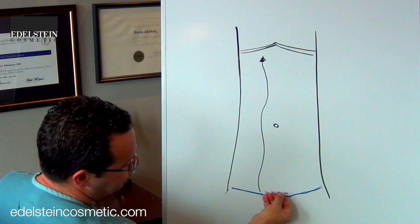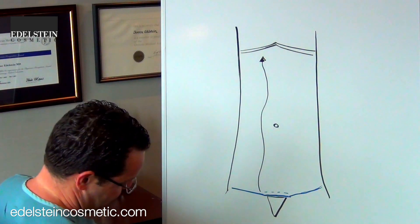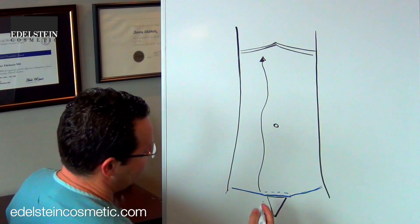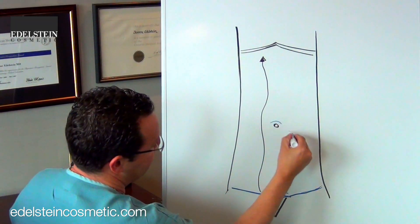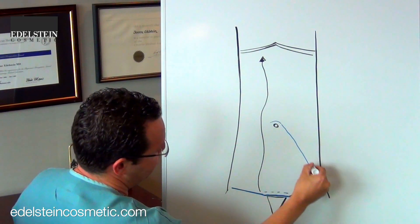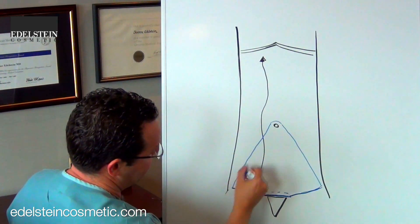We're then going to pull all the extra skin and fat down and remove the extra. In a full tummy tuck, the idea is to remove everything up to and above the belly button.